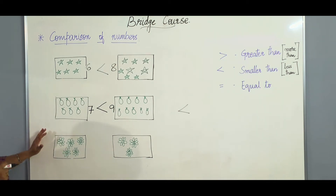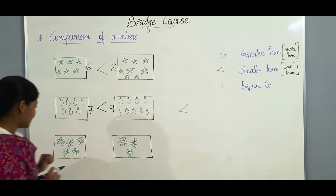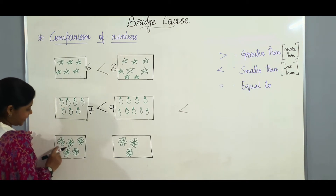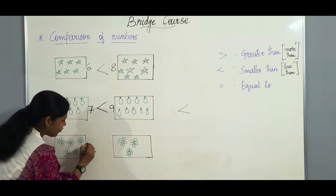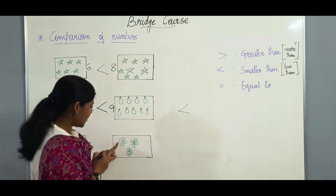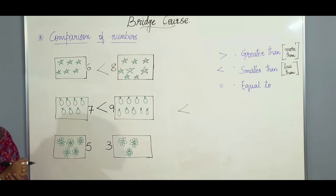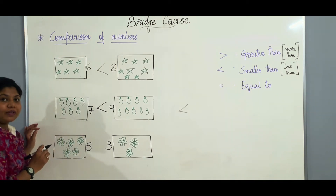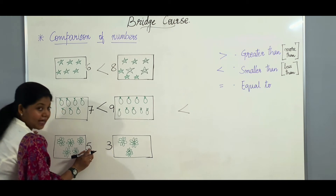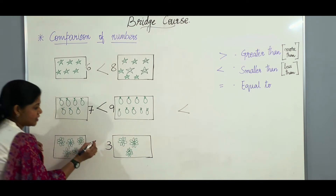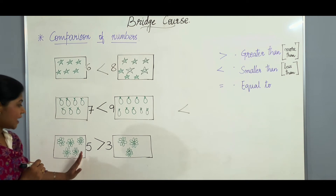Now let us go to the next picture. In this picture we have a few flowers on the left side and a few flowers on the right side. Let us count the flowers on the left side: 1, 2, 3, 4 and 5 — so we have 5 flowers. And on the right side we have 1, 2 and 3 — so we have 3 flowers. The mouth is always open on the greater number, that is on the bigger number. So 5 is greater than 3, and the mouth will be open to the left side, to the number 5.